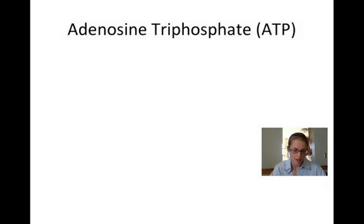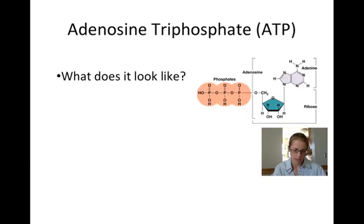Adenosine triphosphate, or ATP, is the molecule that stores the energy that is essential for all the metabolic reactions that take place in a living organism. Like the name implies, ATP is composed of an adenosine nucleoside and three phosphates. As shown in this diagram, an adenosine molecule is made up of the nitrogenous base adenine and the 5-carbon sugar ribose.